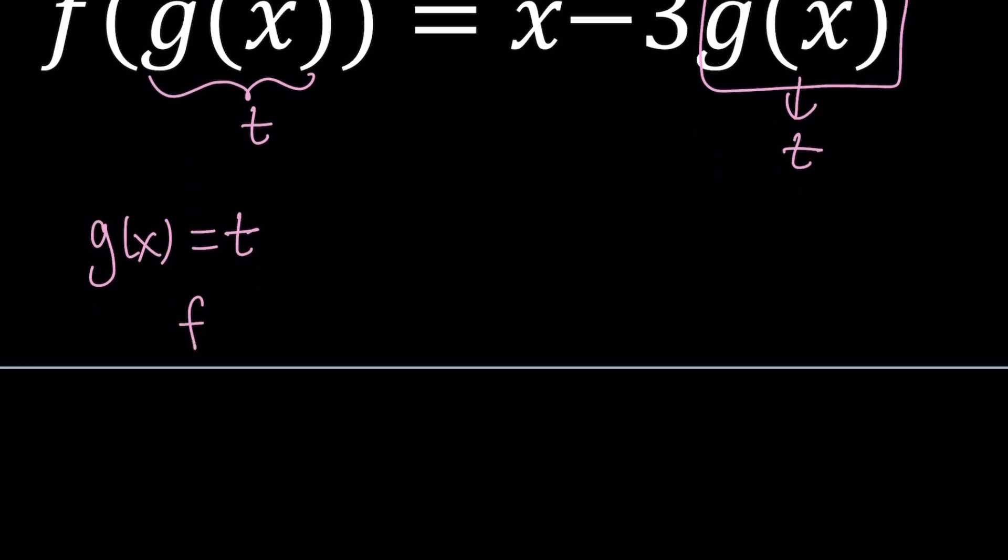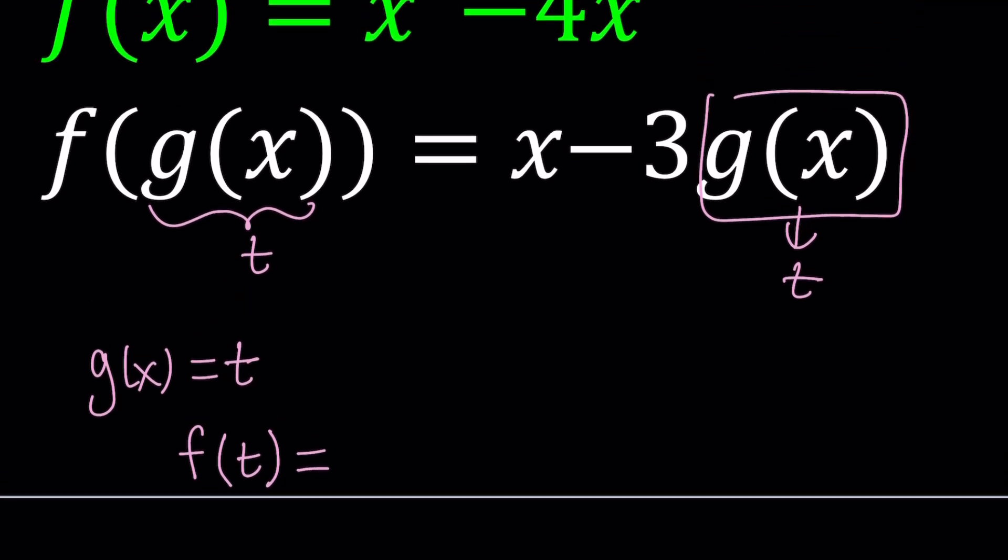We get f of t equals x. By the way, when you replace g of x with t, what do you replace x with? Nothing. Let's just keep it simple. And x is as is. So f of t is going to be x minus 3t.